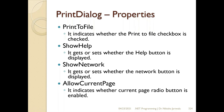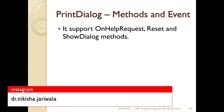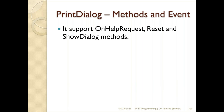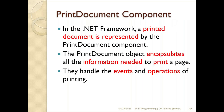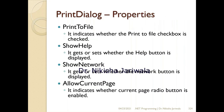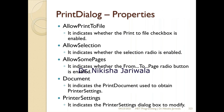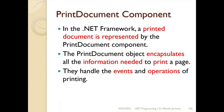So these are the properties of Print Dialog Control. The methods are similar to other dialog controls — that is, On Help Request, Reset, and Show Dialog. Show Dialog method is available for all dialog boxes, because we have to display any dialog control and show it so that the user can perform functionality. This is all about Print Dialog Control, and as I told you, the Document property has PrintDocument attached. Now we will see what that document is.